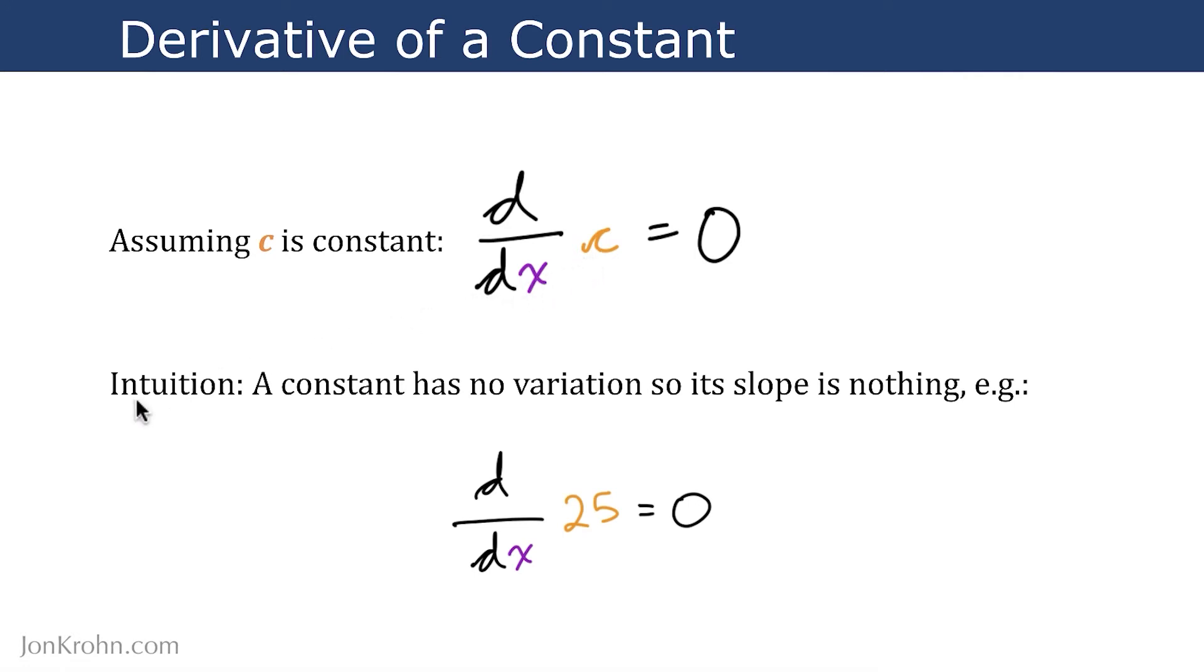The intuition here is that a constant has no variation. It isn't a variable. It's a constant value, and so its slope is nothing. It can't possibly have a slope because it has no variation.